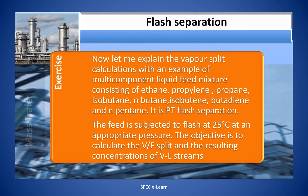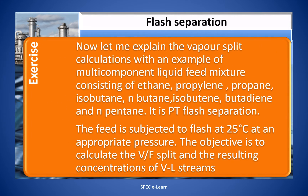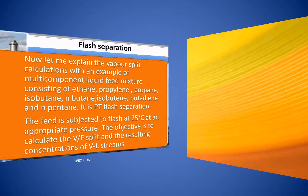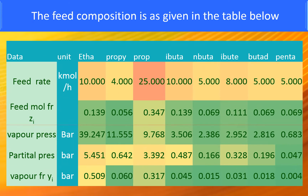Now let me explain the vapor split calculations with an example of a multicomponent liquid feed mixture consisting of ethane, propylene, propane, isobutane, n-butane, isobutane, butadiene and n-pentane. It is a PT flash separation. The feed is subjected to flash at 25 degrees centigrade at an appropriate pressure. The objective is to calculate the vapor-to-feed ratio and the resulting concentrations of the vapor and liquid streams. The feed composition is as given in the table below.